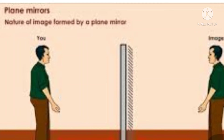Plane mirror is called a looking mirror in which we see our face. The image formed on the plane mirror is upright and straight — that means the same size as your face, the same size as the object.